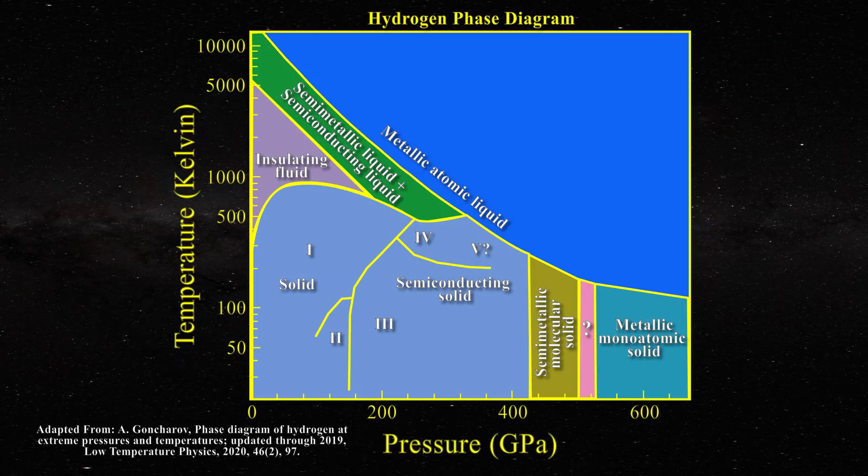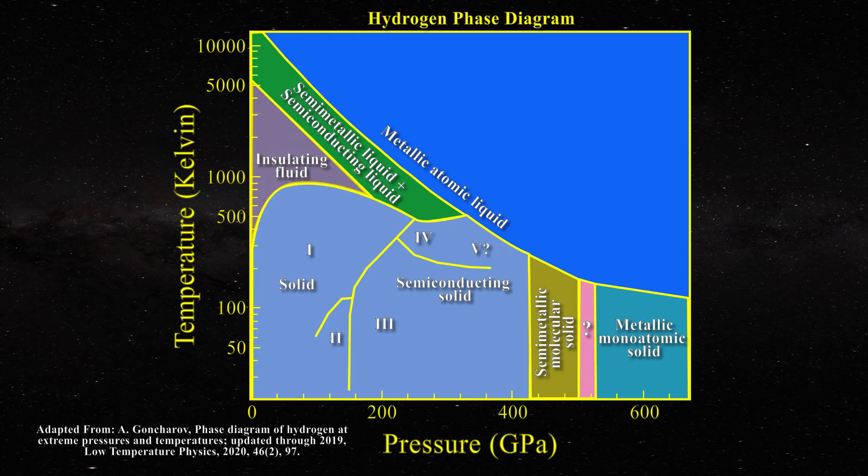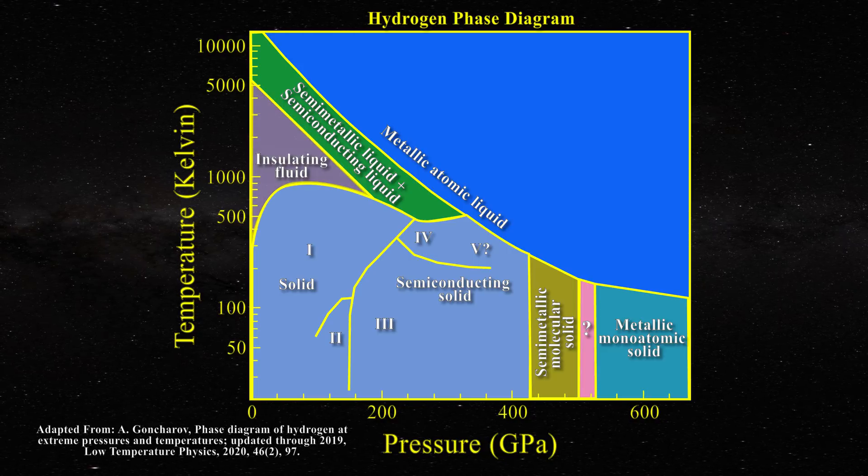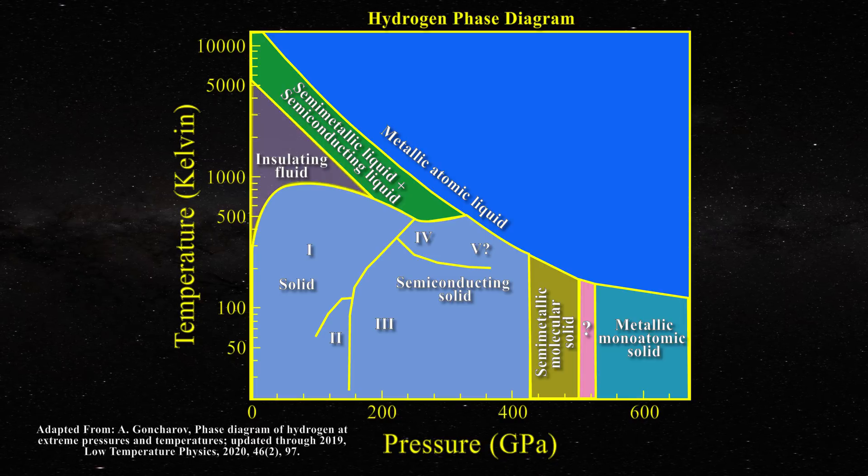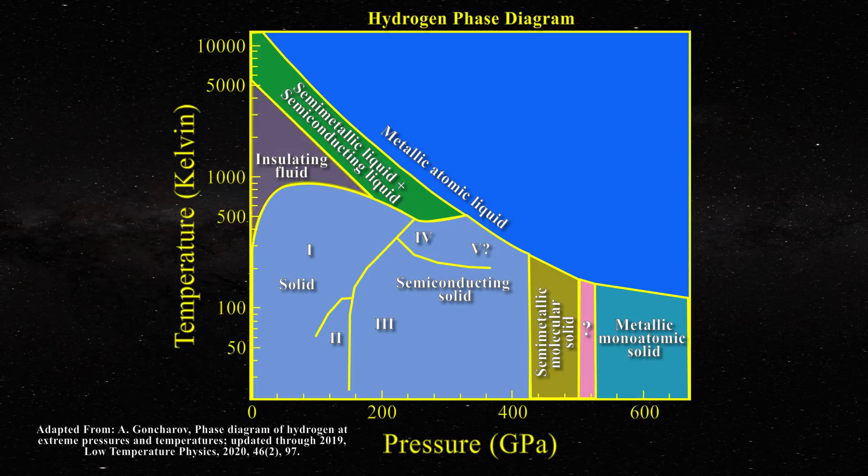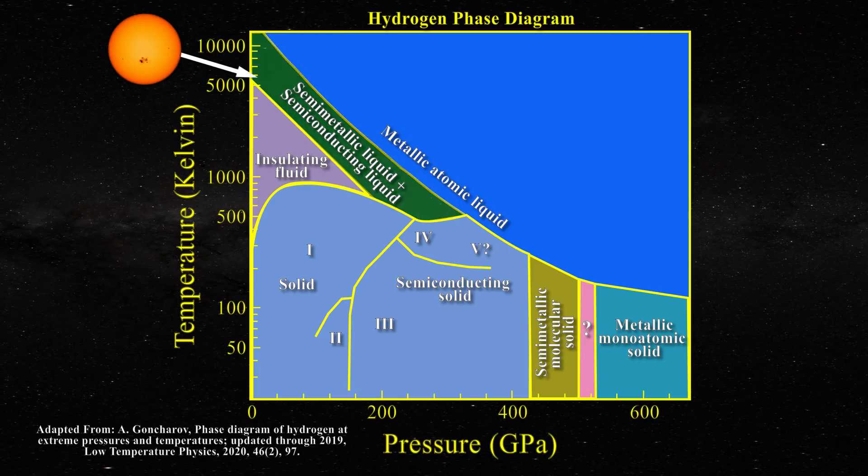In our phase diagram, the region where the hydrogen acts as an insulating fluid is still at low pressures, but now the temperatures are approaching photospheric levels. Just above the insulating fluid region, hydrogen is said to become a semi-conducting liquid or semi-metal. Note that the photosphere would be included in this temperature region.